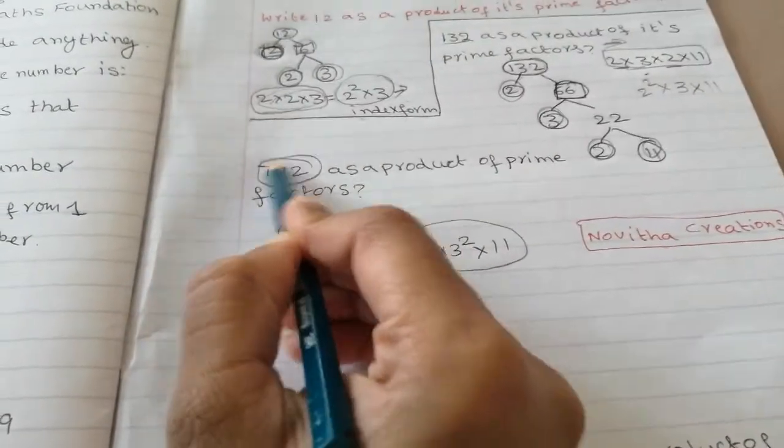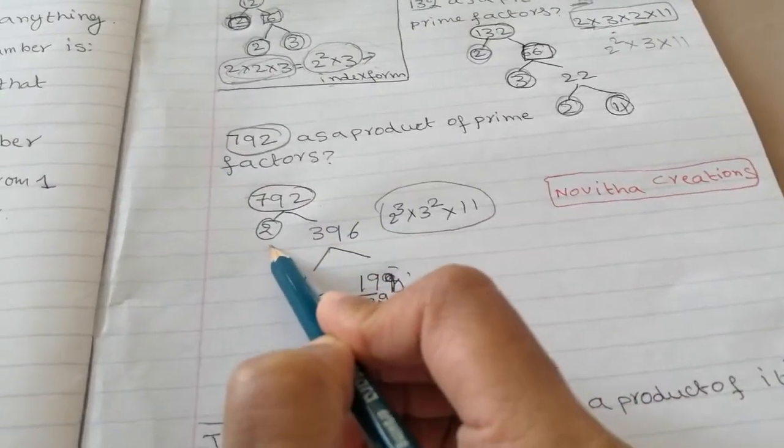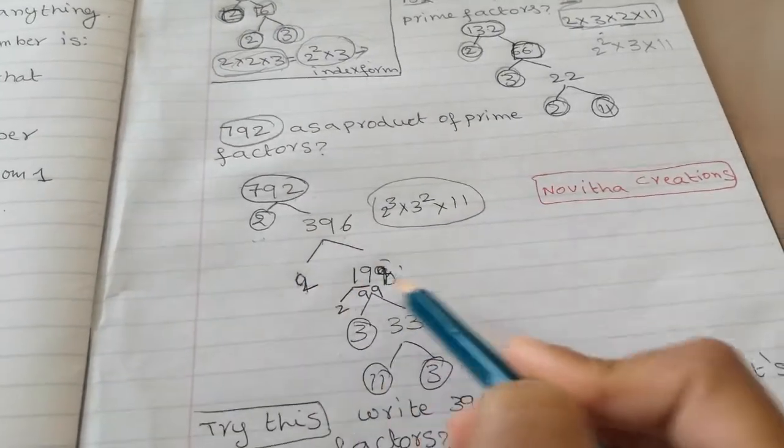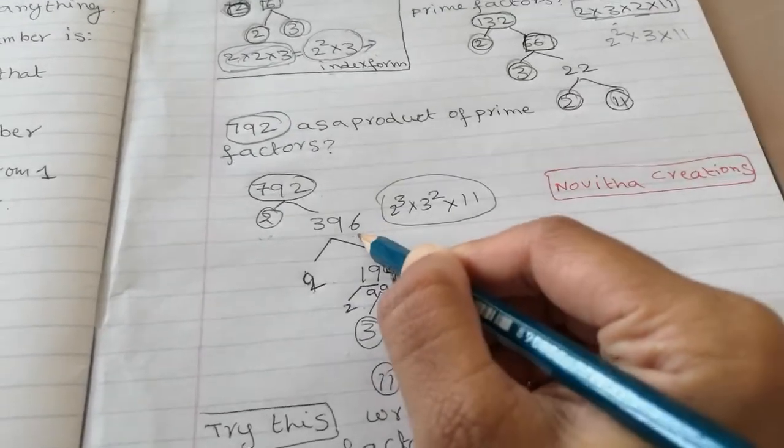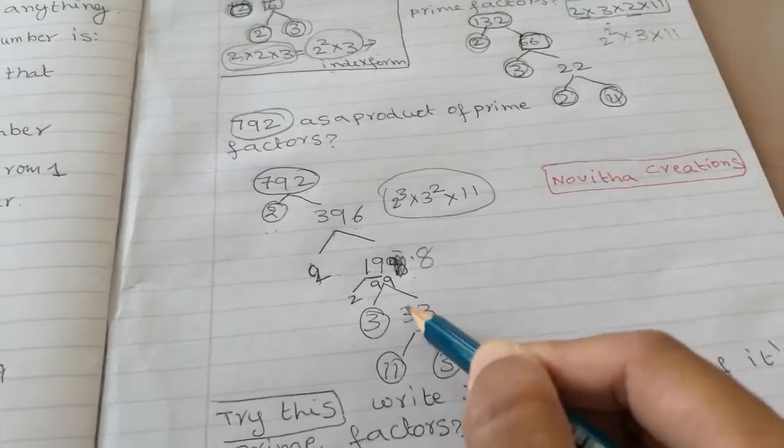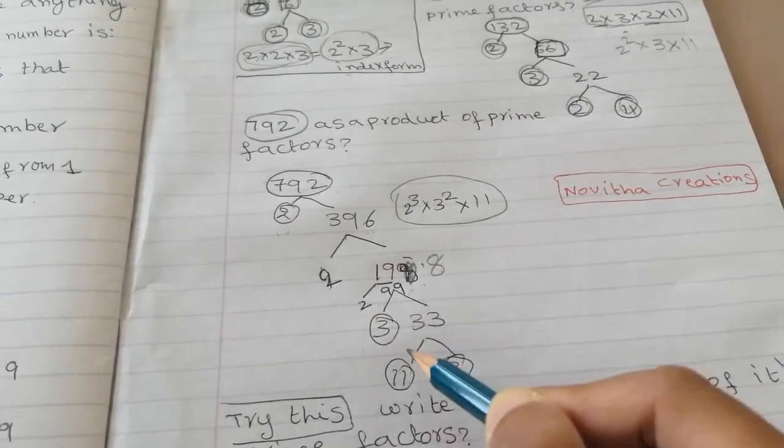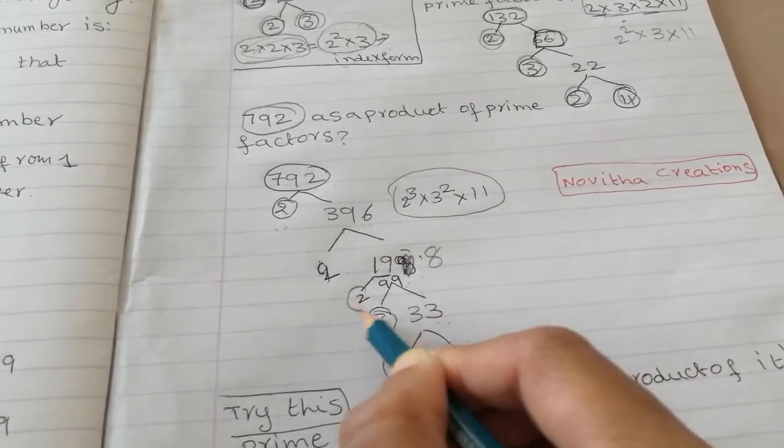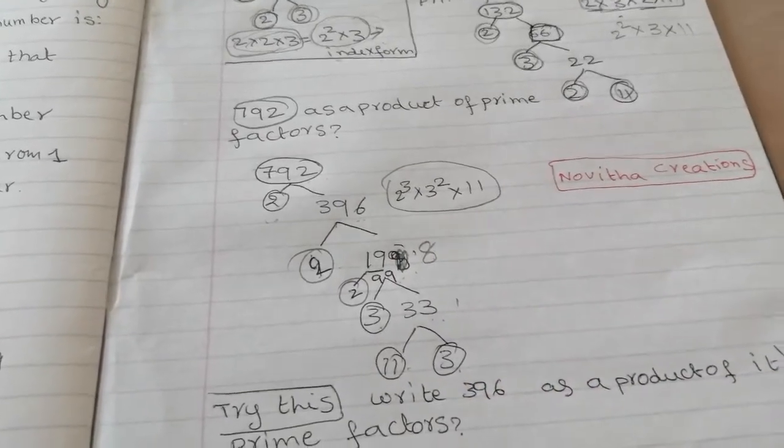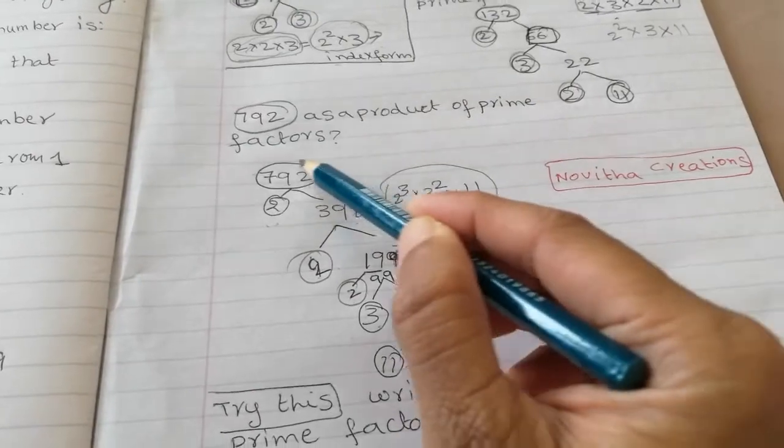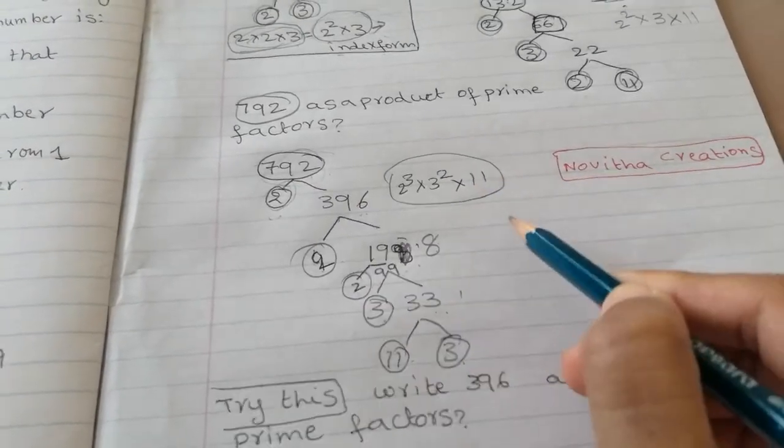And I will show you a big number as a product of its prime factors. 792. It is 2 times 396 is 792. 2 times 198 equal to 396. So 198 is divisible with 2. And 2 times 99 equal to 198. 3 times 33 equal to 99. 11 times 3 equal to 33. We need to divide these numbers with prime numbers. And we need to take all prime numbers.